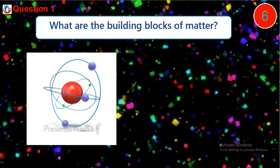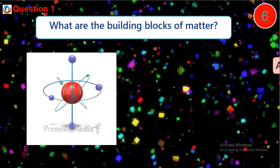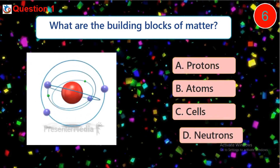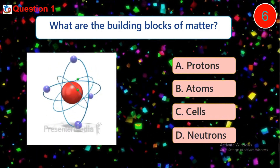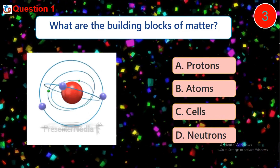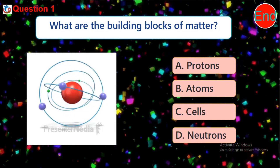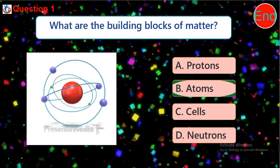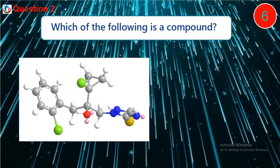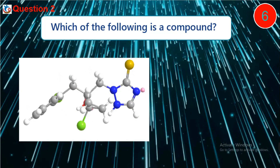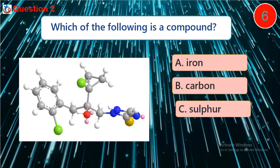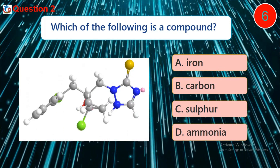Question 1: What are the building blocks of matter? A) Protons, B) Atoms, C) Cells, D) Neutrons. Question 2: Which of the following is a compound? A) Iron, B) Carbon, C) Sulfur, D) Ammonia.